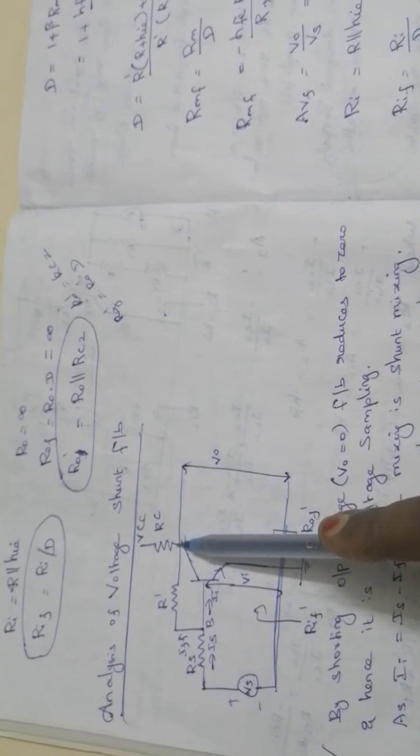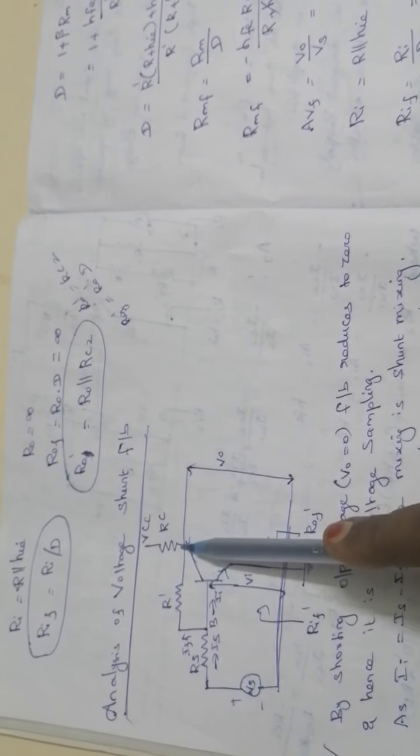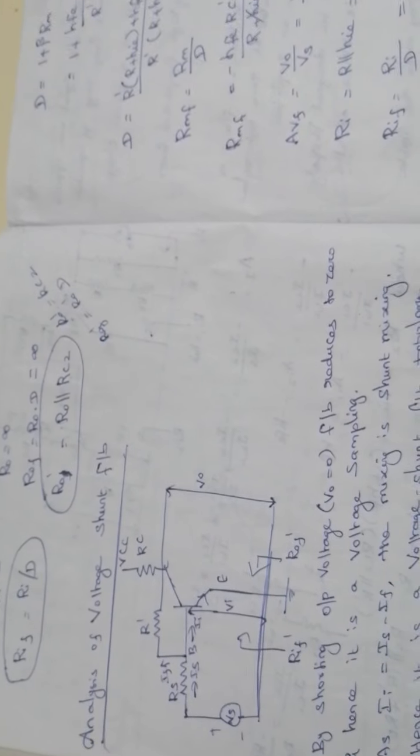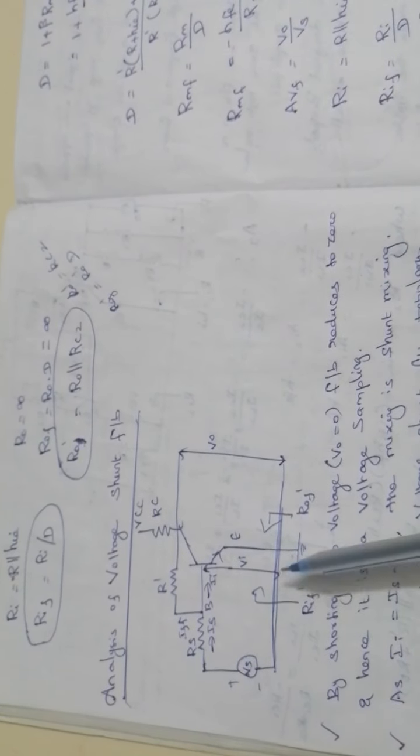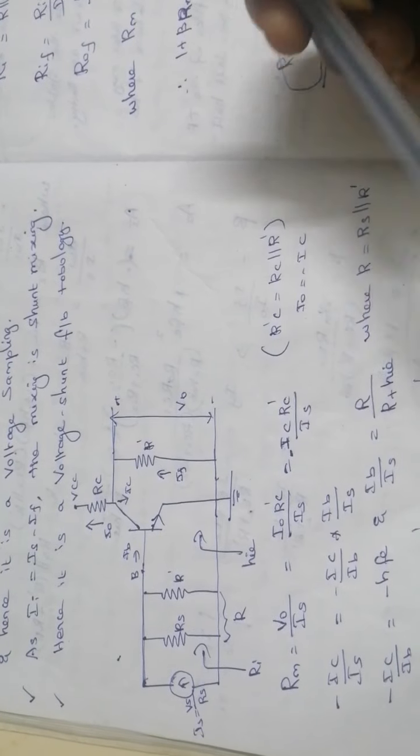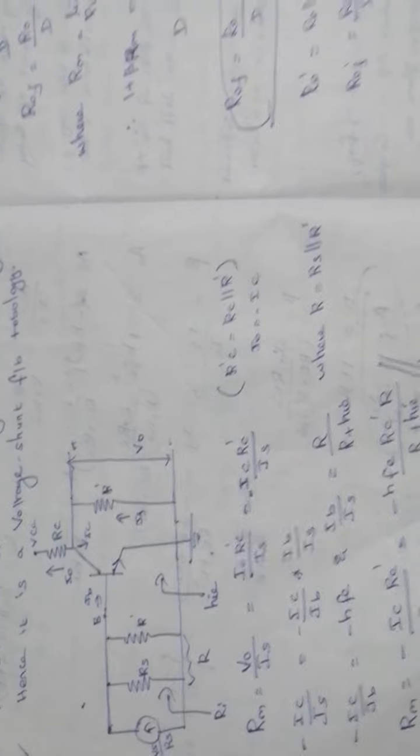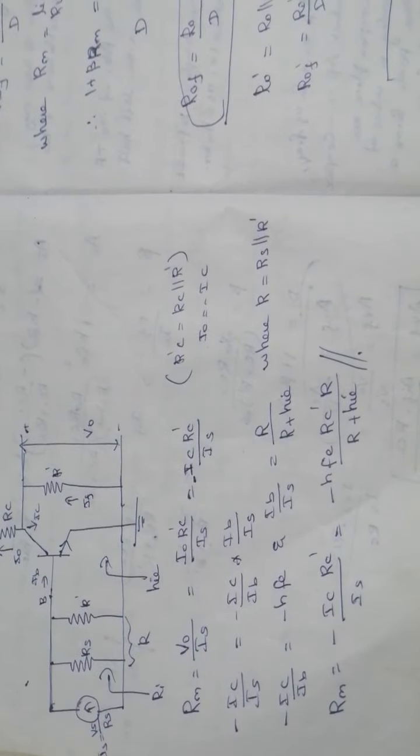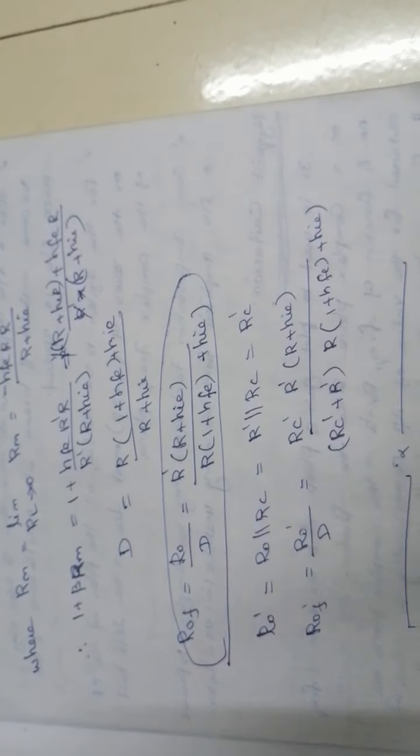The last topology is voltage shunt feedback. In this circuit diagram, the feedback voltage and output voltage are both at the collector terminal — so it is voltage sampling — and the feedback resistance is parallel with the input resistance, making it shunt mixing. We conclude it is voltage shunt feedback. Drawing the equivalent diagram and applying KVL and KCL, we get the parameters. This derivation is covered in Electronic Circuits 1. Finally we get the answers for voltage and feedback parameters: R0f, Rif, and Rmf. That covers the analysis of different types of feedback topologies.